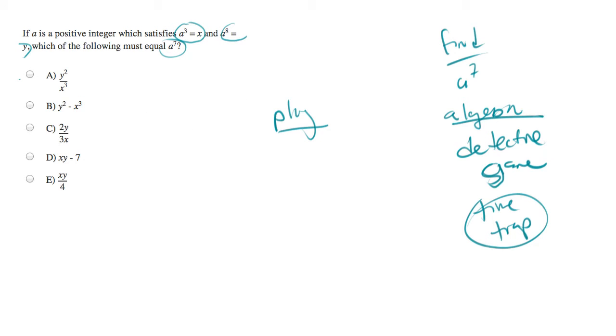Instead, what can work really powerfully and quickly here is plugging in numbers. I like to use small primes when I plug in. The only thing we actually need to plug in for here is a. The smallest prime I can think of is 2. So let's calculate x and y. x is a cubed, so x is 8. y is a to the eighth, so 2 to the eighth is 256.